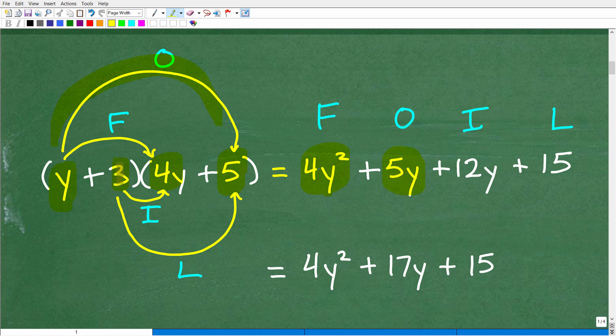Now, our inner is going to be 3 times 4y. So that's going to be 12y. Okay, and then our last is going to be 3 times 5, which, of course, is 15.